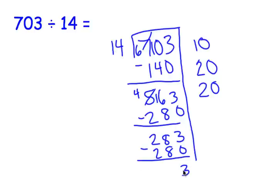14 cannot go into 3, so that's going to be our remainder. Let's add our partial quotients. 0 in the 1's, 5 in the 10's. And put on our remainders. The answer to this is 50, remainder 3.